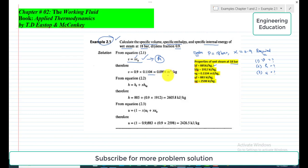Similarly, to find the specific enthalpy, we have expression h = hf + x·hfg. So again, we know these values: h = 885 + 0.9 × 1912. So if we simplify this, we get 2605.8 kilojoules per kilogram.